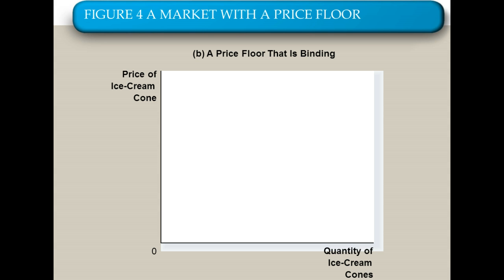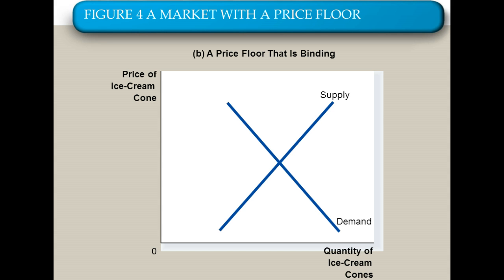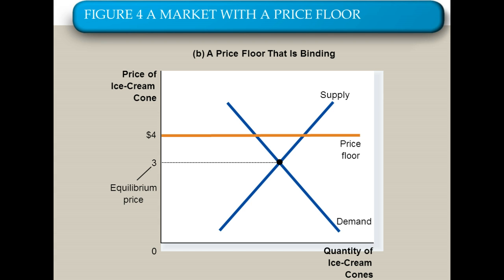Now let's take a look at price floors. Price floors are the opposite of price ceilings — they are legal minimums on the price at which a good can be sold. Here comes our market, supply and demand. Our equilibrium price is going to be $3. We set a price floor above equilibrium. Remember, this is the absolute minimum price that we're allowed to charge. Since the market wants to charge $3 but the government is forcing a minimum of $4, we end up with a quantity demanded of 80 but a quantity supplied of 120 — far more supply than demand.